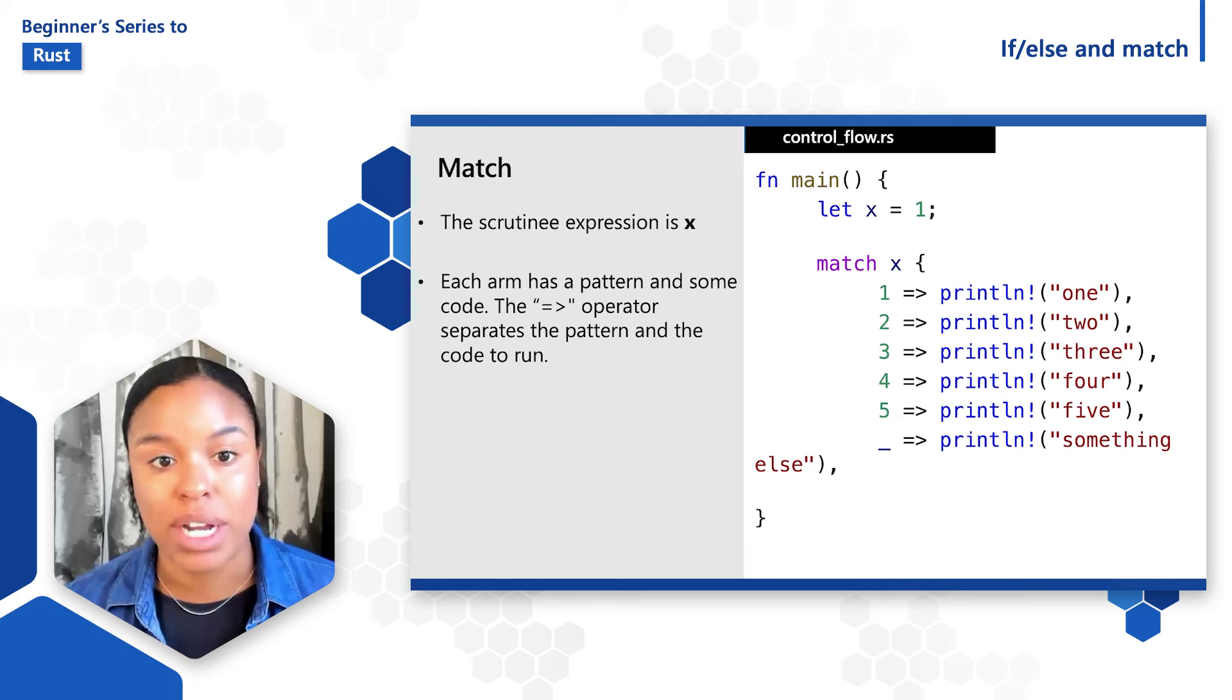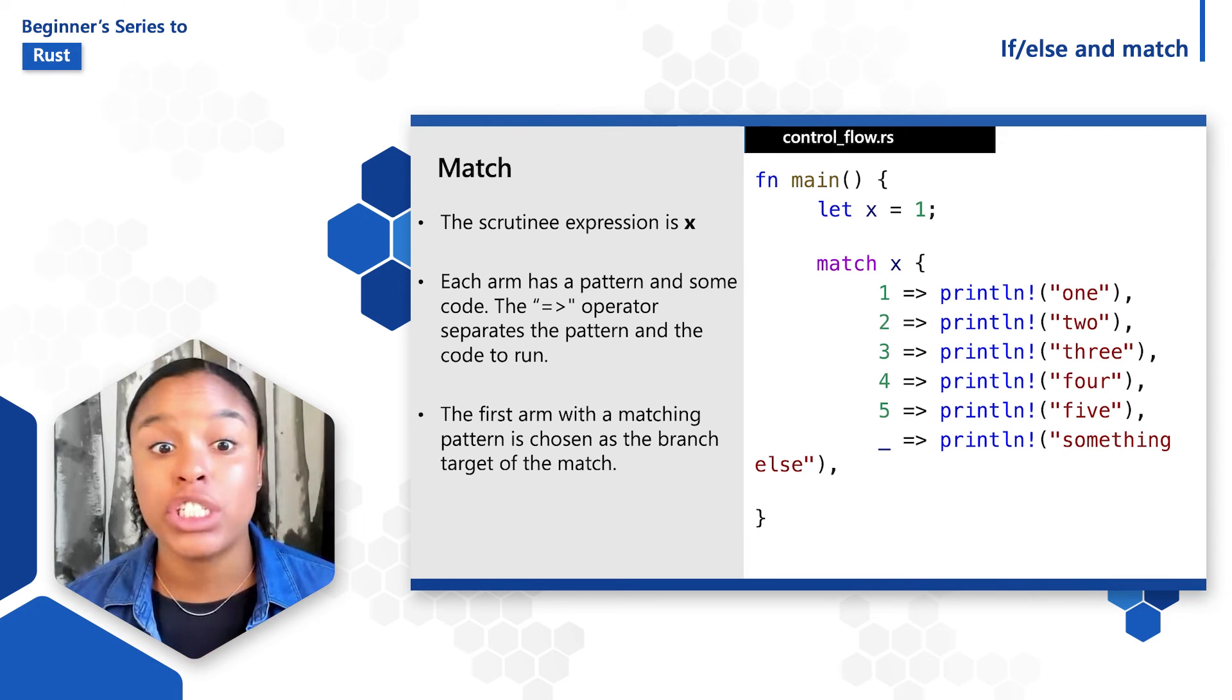Just like with an if-else expression, the first arm with the matching pattern is chosen as the branch target of the match. If none of the other arms match, then the arm with the underscore will be chosen. The very first arm has a value of 1, so that will be chosen as the branch target and the program will print out one.